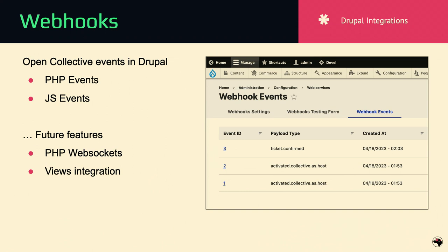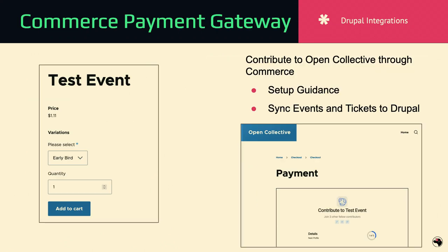The commerce payment gateway: on the left is an example of an event ticket set up in the commerce store, and on the right is part way through the checkout process of a stock Drupal commerce site — we're at the payment step and the payment is the actual iframe of Open Collective. Part of this module is a lot of granular guidance for setup as well as some automation. It syncs events and tickets to Drupal for you — you can just click sync events and it'll create the products and variations automatically.